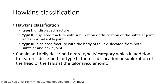Thaline type 3 is a displaced fracture with the body of the thalus dislocated from both the subtalar joint and the ankle joint. Thaline type 4, described by Canale and Kelly, is a rare category which, in addition to the features described for type 3, includes dislocation or subluxation of the head of the thalus at the talonavicular joint.